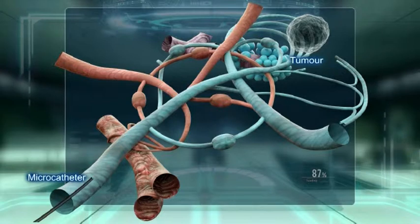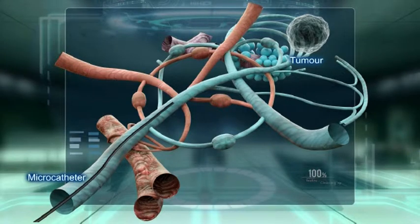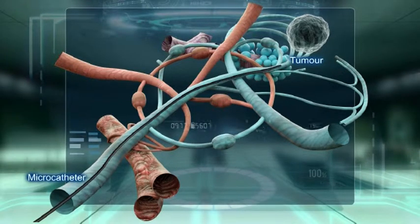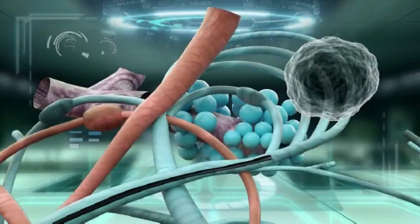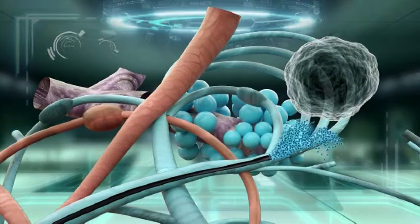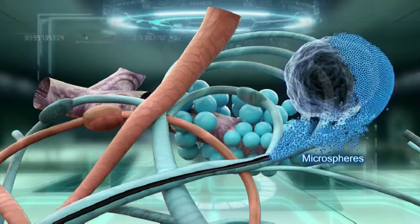The embolization with eluting beads through the pulmonary arteries aims at reducing the heatsink effect around the tumor. The vascular factor is eliminated by the embolization of the whole segment containing the tumor.